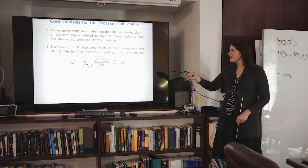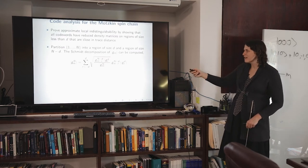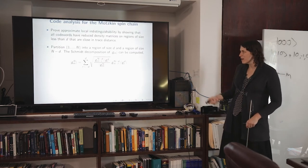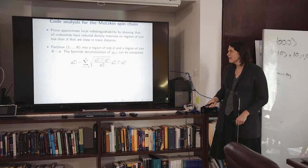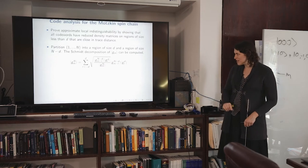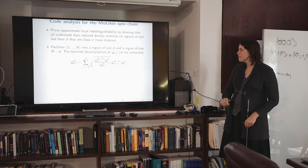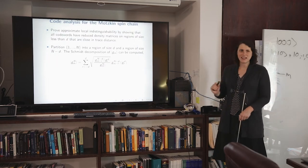To demonstrate approximate indistinguishability, we compute the reduced density matrices on regions of size less than d and show that these reduced density matrices between the different code words are all close to each other in trace distance. It's a direct, combinatorial calculation rather than an abstract argument.